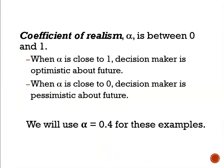The coefficient of realism, alpha, is a value between 0 and 1. Values close to 1 indicate that the decision maker is optimistic about the future, and values close to 0 indicate that the decision maker is pessimistic about the future.